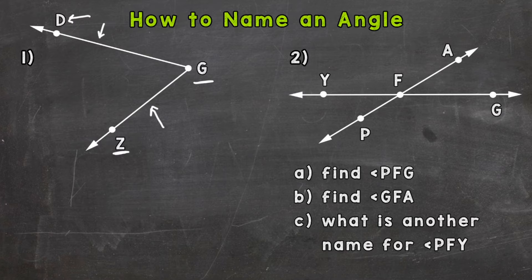Once we have the points on our line segments and the vertex identified, we are able to name our angle. I'm going to start here with the symbol that means angle. Now we start with one of our points, we're going to start with D. So we start with D here, we go down to our vertex G, and then down to our other point on our line segment Z. So one of our names could be angle DGZ.